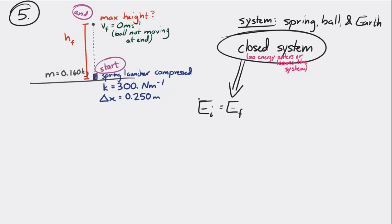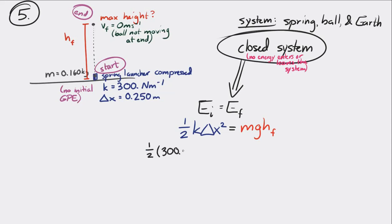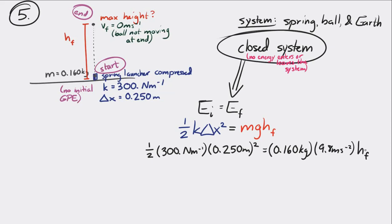So EI equals EF. At the beginning, it's on the ground, so there's no gravitational potential energy — it's at a height of zero. But the spring is compressed, so we have spring potential energy at the beginning. That equals the total energy at the end. At the end, the only type of energy is gravitational potential energy — it's not moving. We know K, the compression of the spring, the mass, and g. Solving for the final height: 5.98 meters.